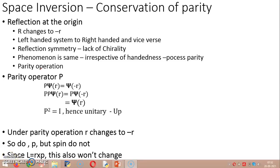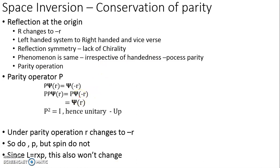We now move on to the cases of discrete symmetries, which are symmetry operations associated with inversion in space and inversion in time. First, let us consider space inversion and the associated conservation law resulting from the invariance of the Hamiltonian under the space inversion operation, referred to as parity conservation.